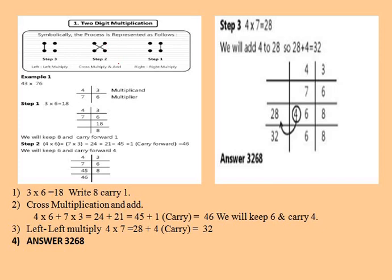So with the help of that symbolic representation, we follow the steps. The first step is we take the multiplication of the units digits — that is 3 into 6 is equal to 18. So 3 is present here and 6 is here, so 3 into 6 gives us 18. Keep 8 and carry forward 1.